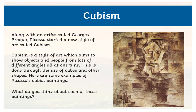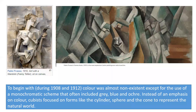What do you think about each one of these paintings? To begin with, during 1908 and 1912, colour was almost non-existent except for the use of a monochromatic scheme that often included grey, blue and ochre. Instead of an emphasis on colour, cubists broke down forms like the cylinder, sphere and cone to represent the natural world.